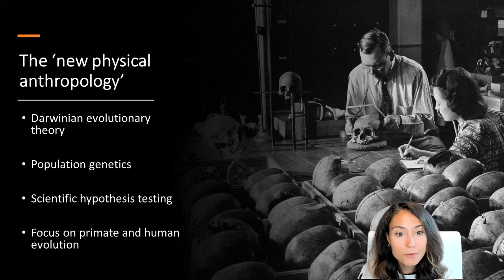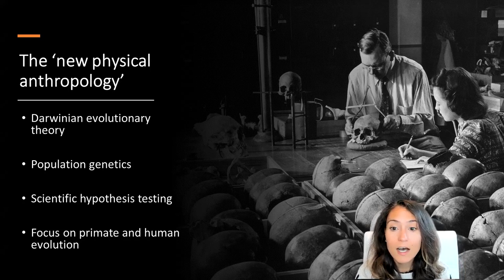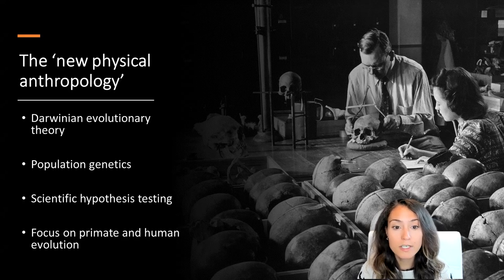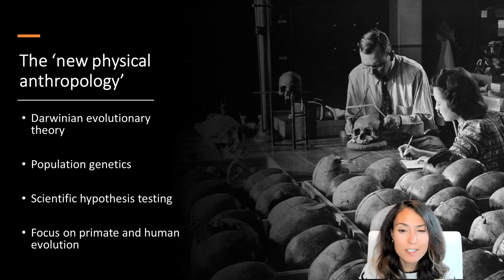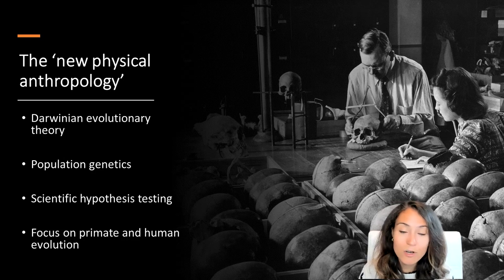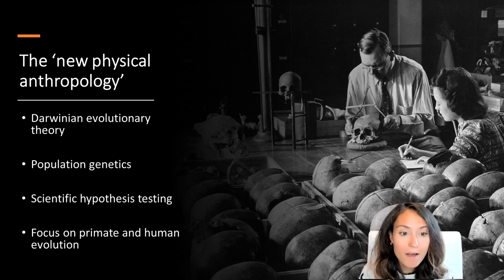Beginning in the 1920s, physical anthropology as an academic discipline started to expand, primarily under the direction of Ernest Hooton at Harvard University. By the 1950s, physical anthropology and biological archaeology had moved away from descriptive measurements of craniology and descriptive measurements of society like social Darwinists, and instead had started doing hypothesis testing.